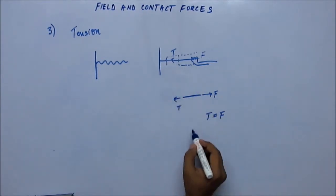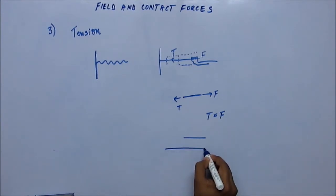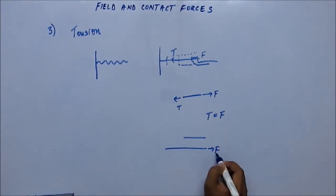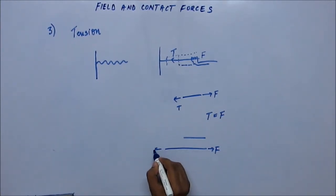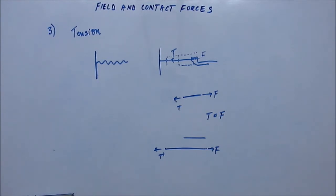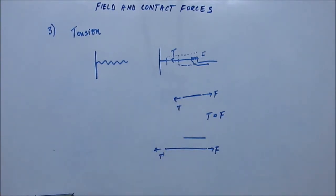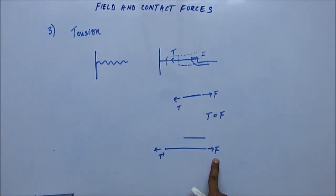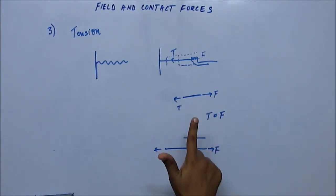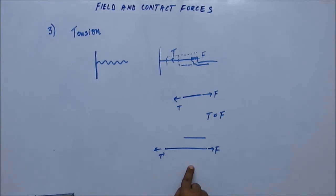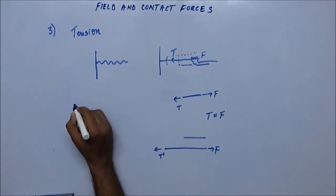If we cut the section from a different position — a larger section — and analyze it, there is force F on the right-hand side and tension T' at the new cut point. This larger section of string is also at rest, so net force must be zero. Therefore T' is also equal to F. This means you can cut the string at any point and you will find the tension equals the external force — so the tension throughout the string is the same.